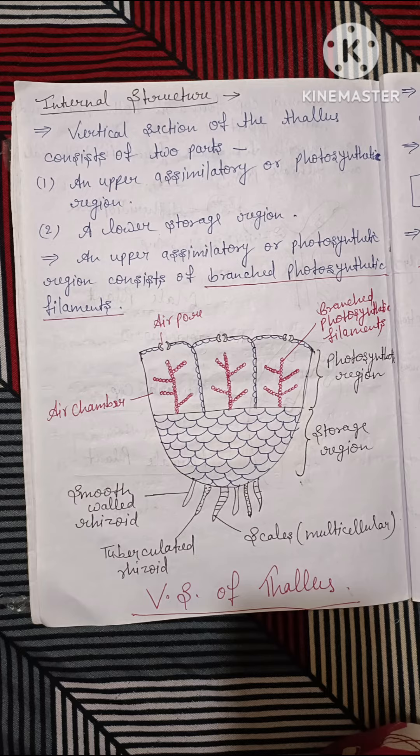The thallus has two parts: the photosynthetic region and the storage region. The photosynthetic region consists of air chambers which open to air pores, and branched photosynthetic filaments. The storage region consists of smooth-walled rhizoids and tuberculated rhizoids.